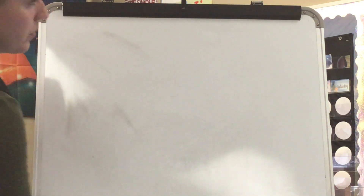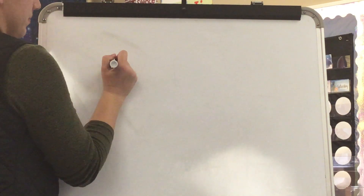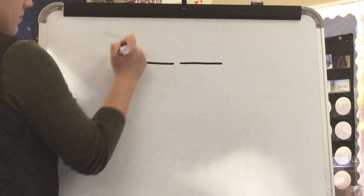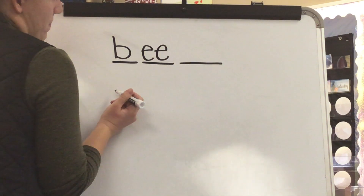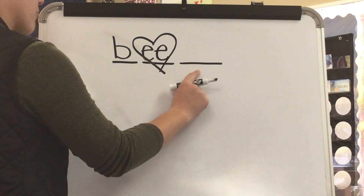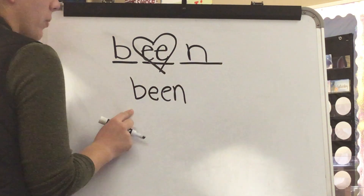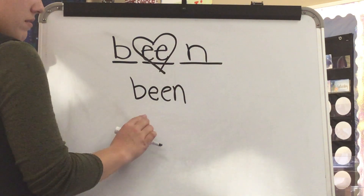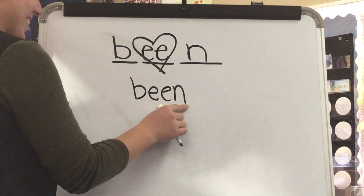We have two new heart words today. Our first new heart word is Ben. What word? Ben. Stretch Ben. Ben. What is the first sound you hear in Ben? B. Yes. B. Eh. The next sound, eh, is spelled E-E. This is a tricky part of Ben that we have to know by heart. B. Eh. Final sound. N. Yes. This is the word Ben. What word? Ben. Spell Ben. B-E-N. Word. Ben. Yes.